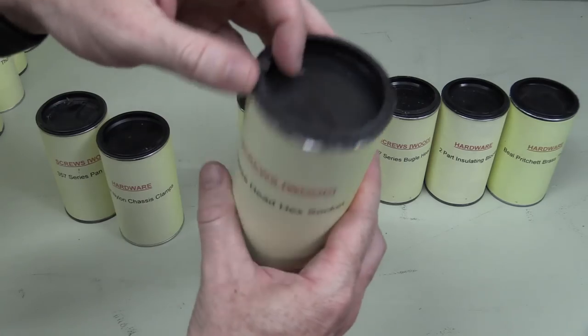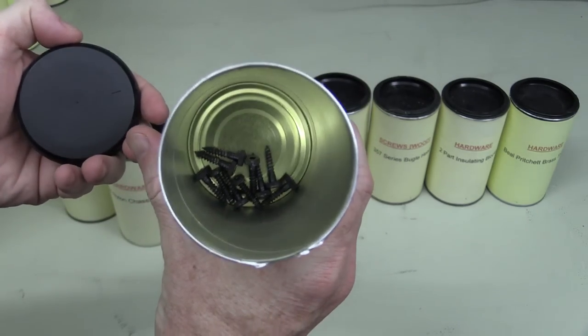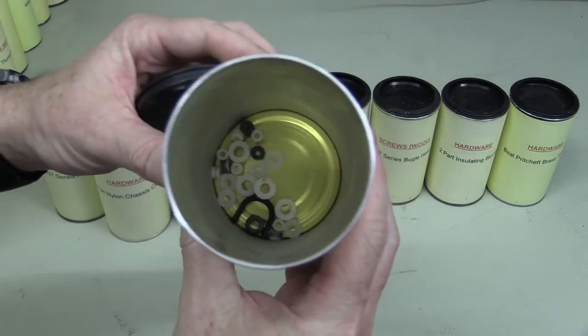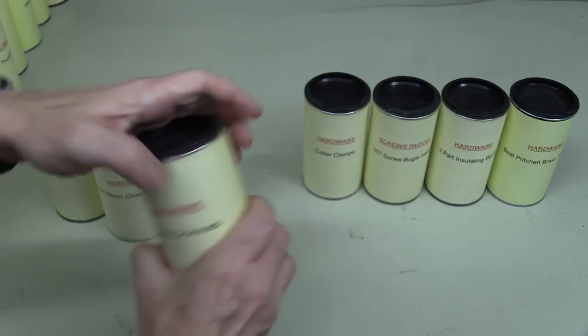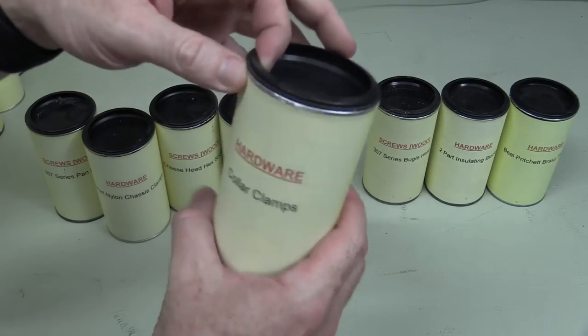Cheese head pan hex socket. Oh yeah, actually we're doing okay, there's not many in there. Plastic grommets, so just a couple of miscellaneous plastic grommets. Gone to all the trouble to label this tin just to put a couple of plastic grommets in anyway.